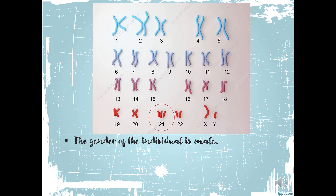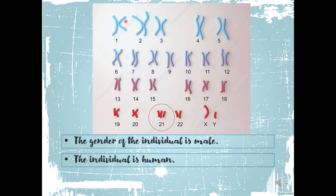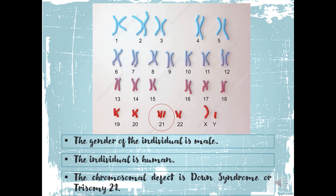First, the gender of the individual is male — why male? Because the sex chromosomes of this particular karyotype are XY. The individual is human because we have 23 pairs of chromosomes for a total of 46 chromosomes. The chromosomal defect is Down syndrome or Trisomy 21 — Trisomy 21 because in the 21st pair of chromosomes there are 3 chromosomes. The normal is only 2 chromosomes, so the defect in this karyotype is Down syndrome or Trisomy 21.